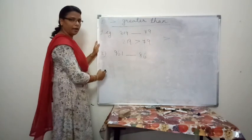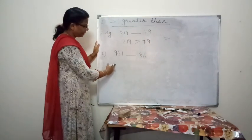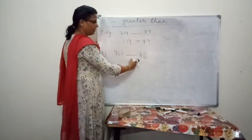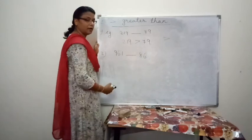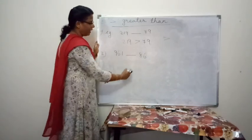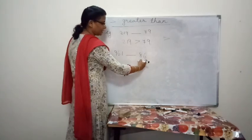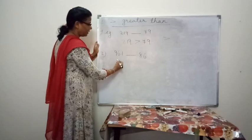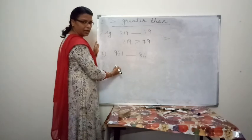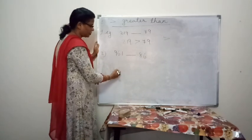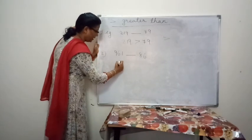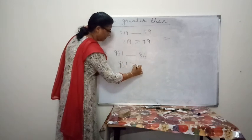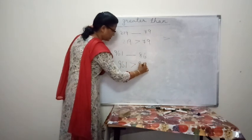Another example: 961 and 86. Here, 86 has 2 digits and 961 has 3 digits. So we write: 961 is greater than 86.